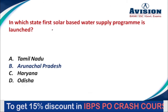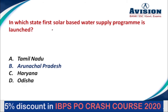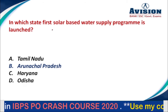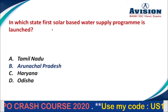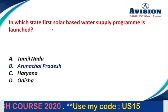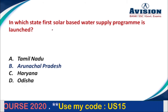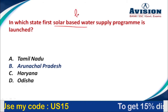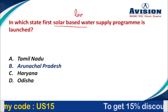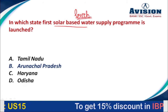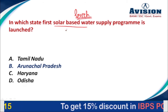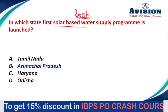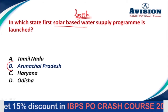Next, question number 2: In which state was the first solar-based water supply program launched? Options are Tamil Nadu, Arunachal Pradesh, Haryana, and Odisha. The correct option is option B, that is Arunachal Pradesh. The Chief Minister of Arunachal Pradesh is Pema Khandu, and the Governor is B.D. Mishra.